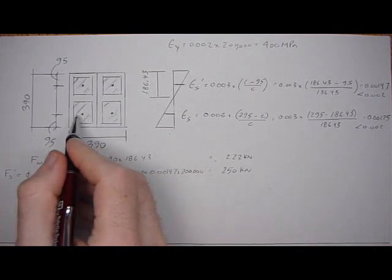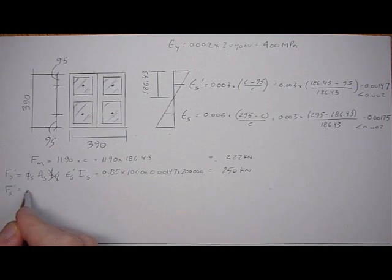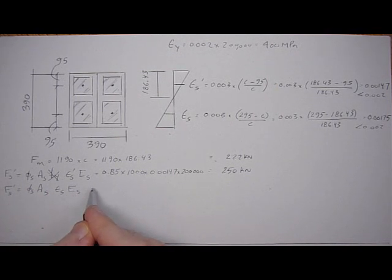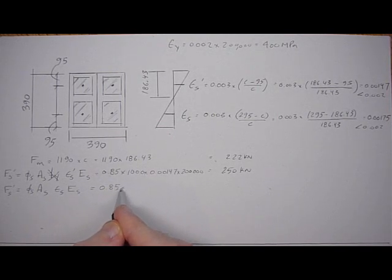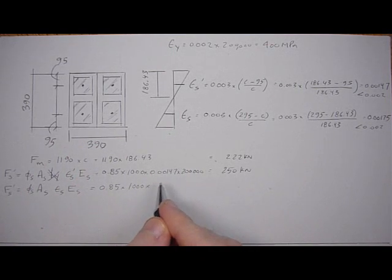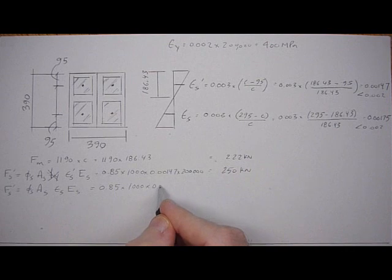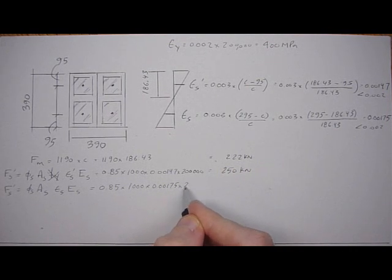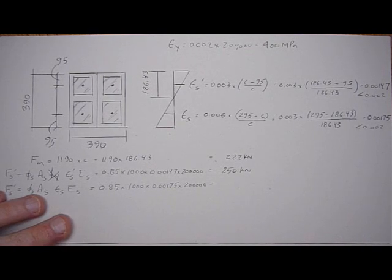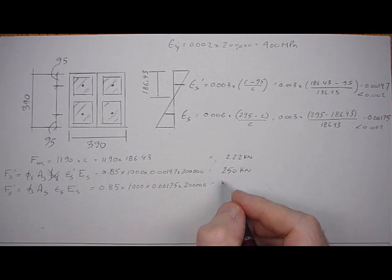The strain in the bottom steel is in tension, and again it did not yield. So you have to use the strain in the steel times E of the steel. The bottom area of steel is 2500 mm² times 0.00175, which comes out to 298 kilonewtons, and that's negative.